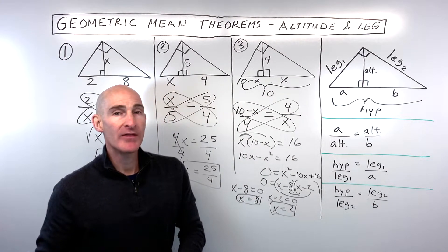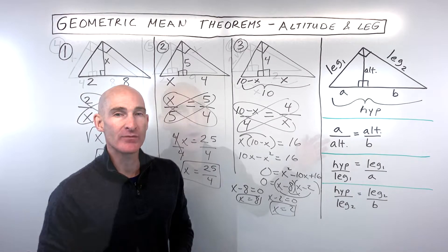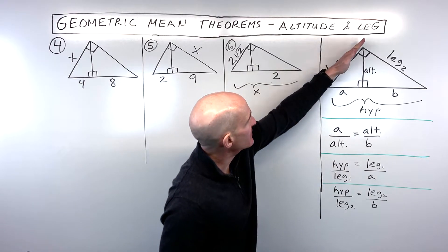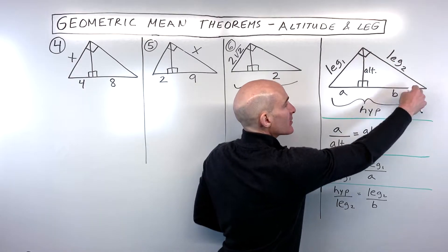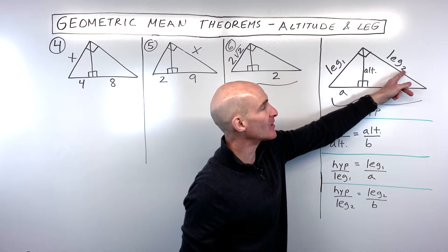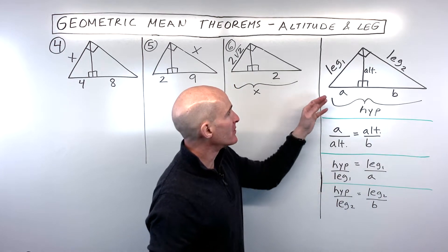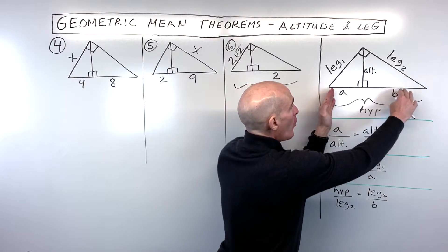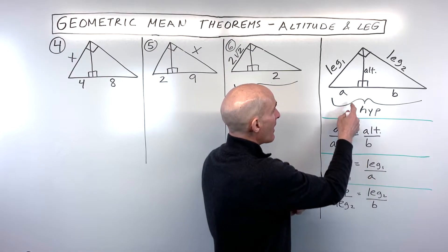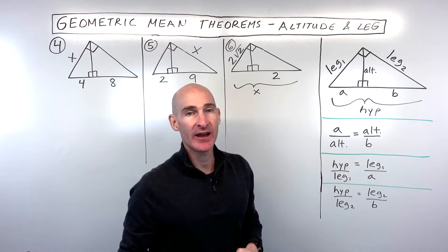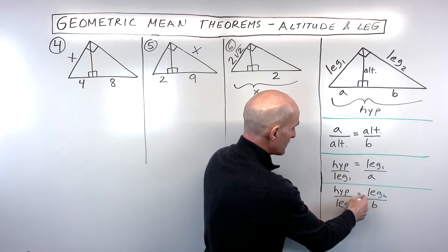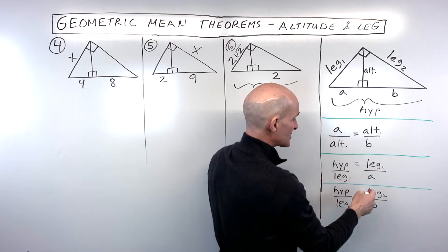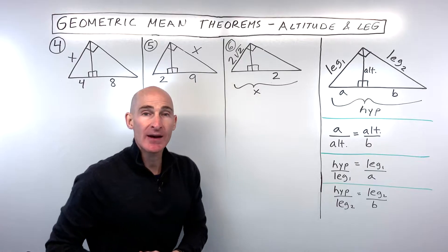Now let's talk about the leg theorem. The leg of the right triangle is the geometric mean of the whole hypotenuse and the part of the hypotenuse that is adjacent to — closest to — that leg. So if you're dealing with leg number two, you'd say leg two is the geometric mean of the whole hypotenuse length and the part of the hypotenuse next to that leg, b.